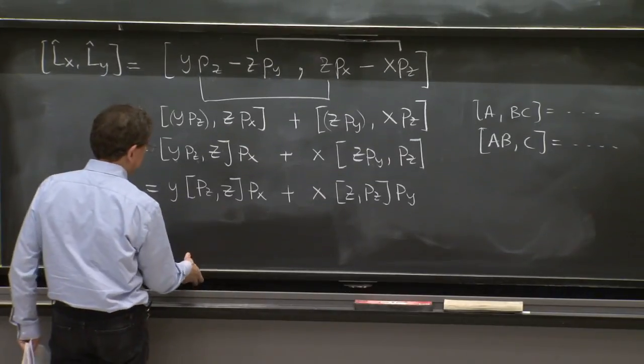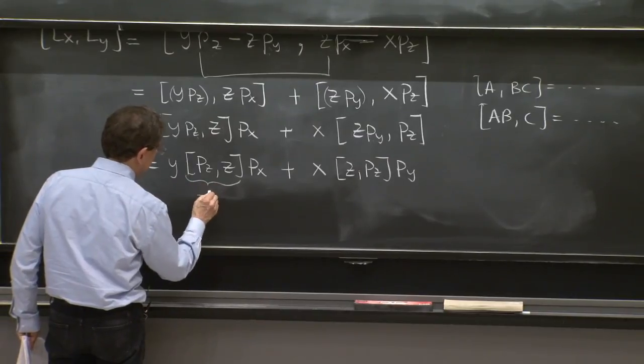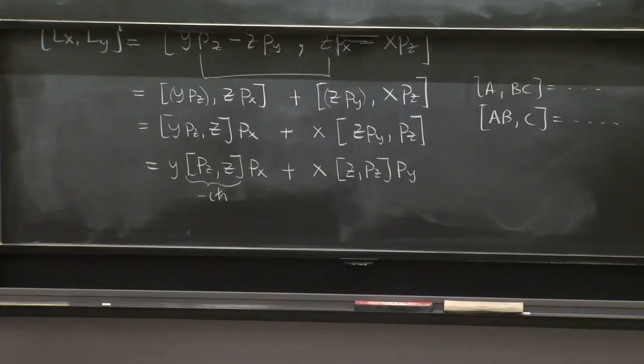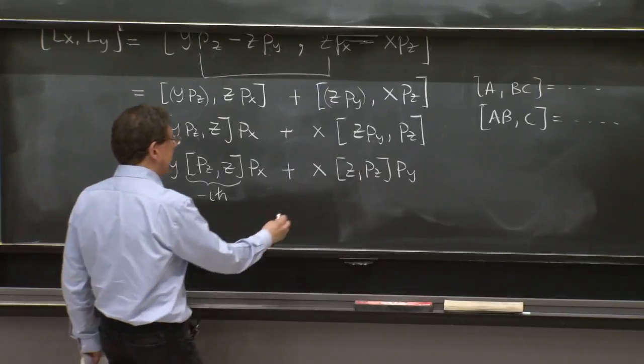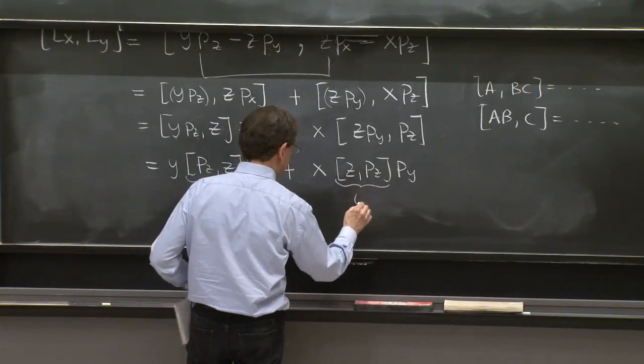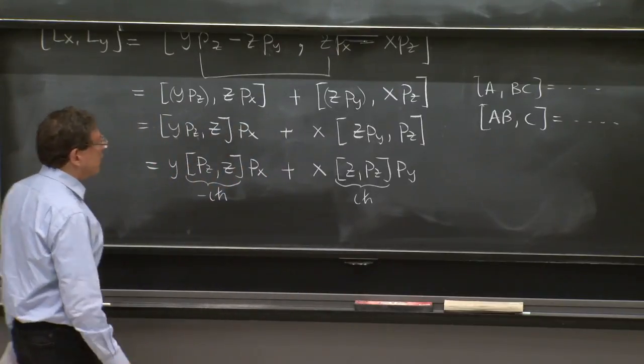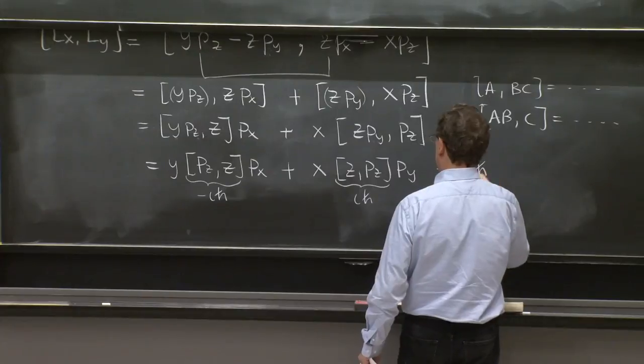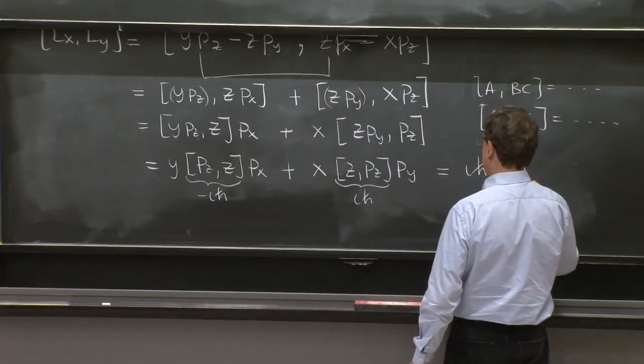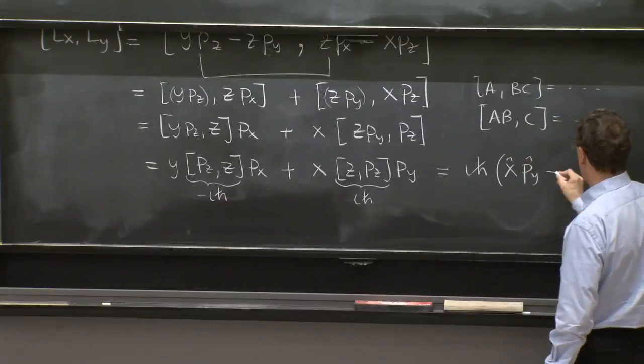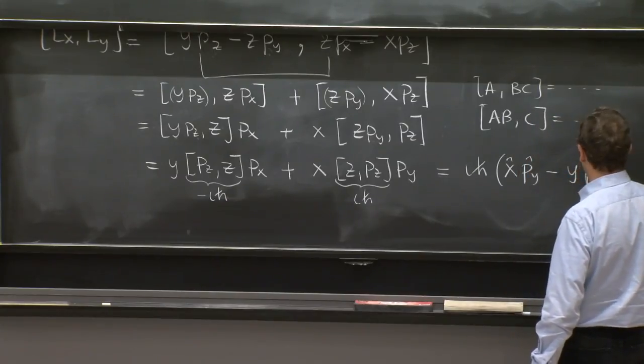Now, this is minus i h bar. And this is i h bar. So here we get i h bar x py minus y px.